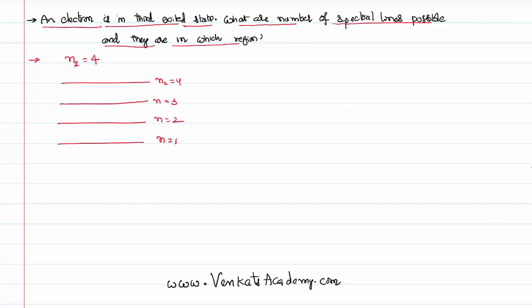The electron is jumping from the 4th orbit. Where can it jump while it is releasing energy? The electron from the 4th orbit can jump into 3rd orbit, can also jump into the second orbit, and can also jump into the 1st orbit. These are the possible spectral lines. There are three spectral lines possible.